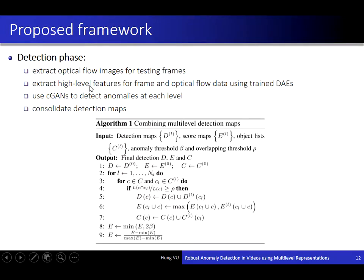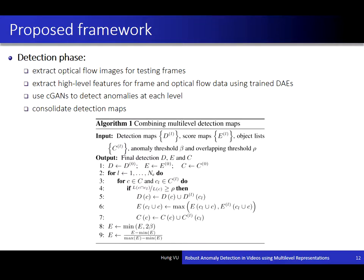We use the two trained denoising autoencoders to extract high-level representations for frame and optical flow data, and apply cGAN to detect anomalies at each level. Finally, we combine detection maps at many levels to get the final detection result.